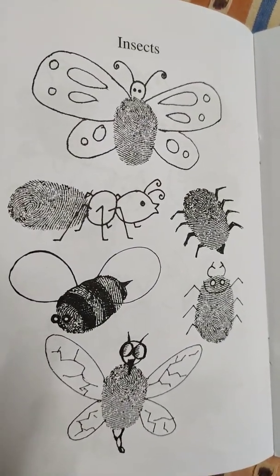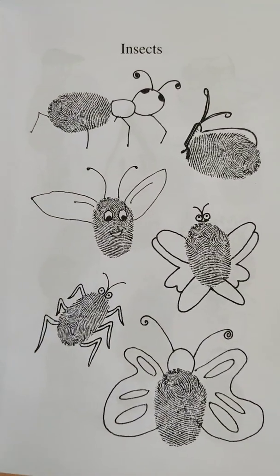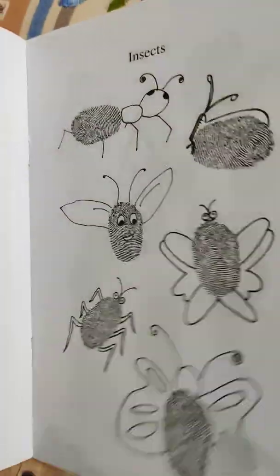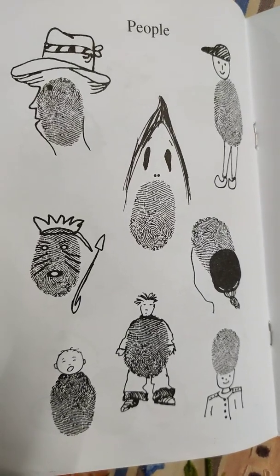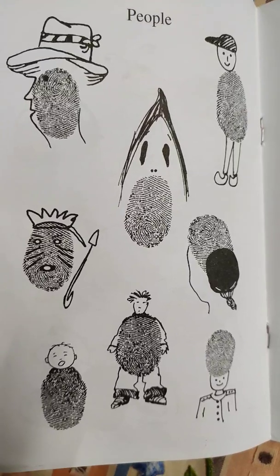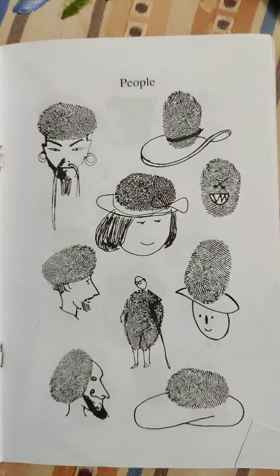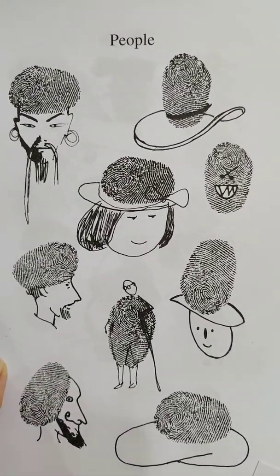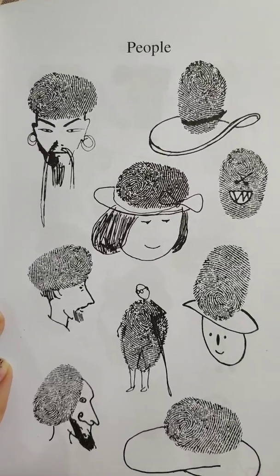Insects — wow! Butterflies looking so beautiful. Look at these insects too. Now, people — wow! This is how we can make different kinds of people as well. There is a baby at the bottom left corner, and it's looking so nice. Some more people — we can make people with a hat, with a turban, with moustaches, and so on.